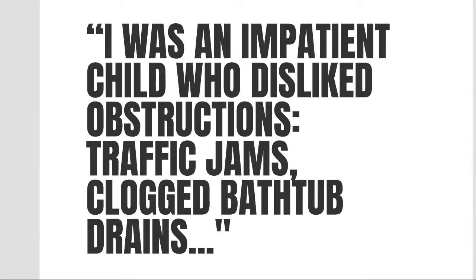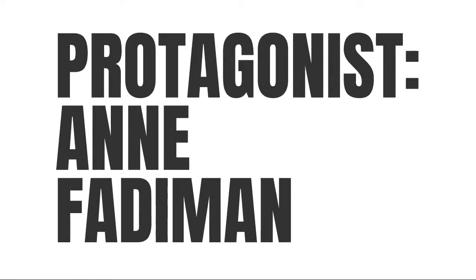The story begins with a statement — it's a narrative, so everything is a statement — but the interesting thing about the initial statement is that it refers to a memory from her childhood. She says, 'I was an impatient child who disliked obstructions: traffic jams, clogged bathtub drains, ketchup bottles you had to bang.' She then tells the story of little twigs flowing down a river, and if they hit a snag, Fadiman refers to the removal of those obstacles so the flow could continue.